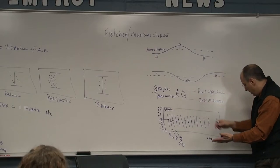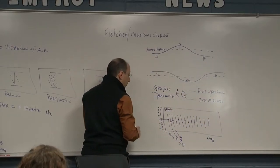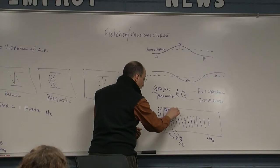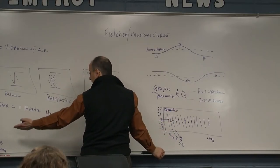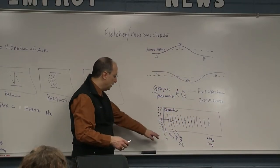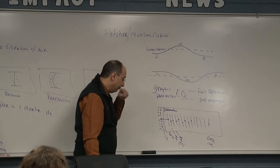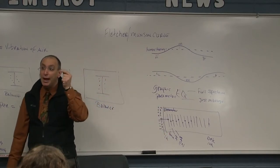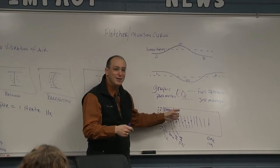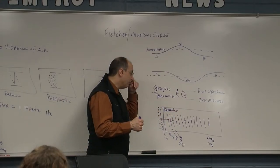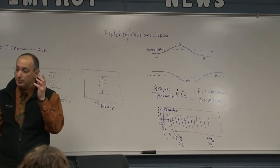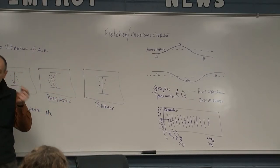A parametric equalizer will say 'parametric' on it, and the numbers will not start that low — they'll start around 1k and end around 16k. So right away that tells you it's a parametric equalizer. It makes sense to have an equalizer that just tweaks or adjusts mid-range frequencies, because we hear mid-range so well that any little change we detect right away.